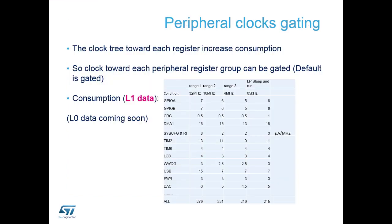Beyond the clock controller are the peripheral clocks. Each peripheral has its own dedicated clock system dependent on the complexity of the peripheral and the speed the peripheral is running. By default all peripheral clocks are off to provide the lowest power profile at start-up.